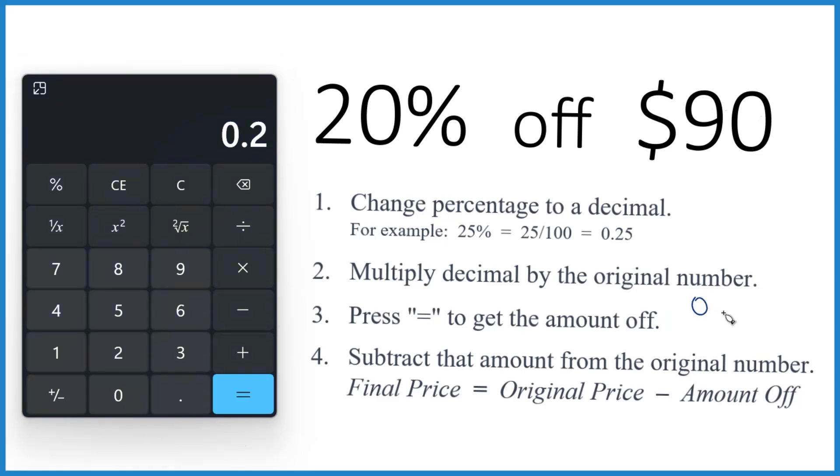and multiply that by the original number, which is 90. So 0.2 times 90. When you do that, 0.2 times 90, you get 18.